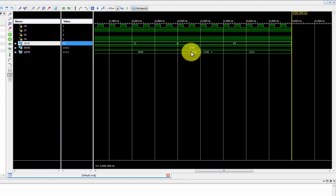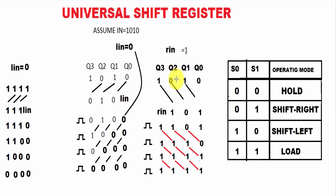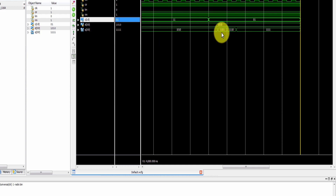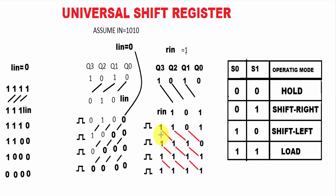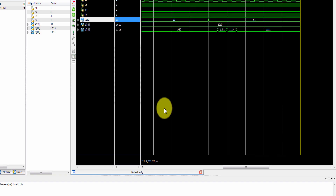In the first right shift with input 1,0,1,0: Q3=Q2, Q2=Q1, Q1=Q0, and RN goes into Q3. After right shift we have 1,1,0,1. Next clock — one more right shift — RN value 1, result 1,1,1,0. Next clock gives 1,1,1,1. Then 0 shifts in.